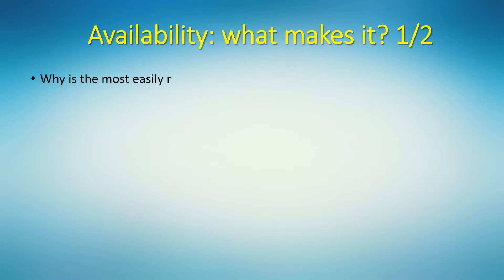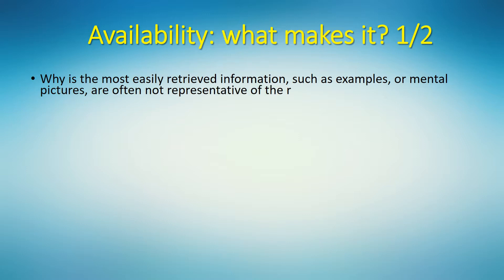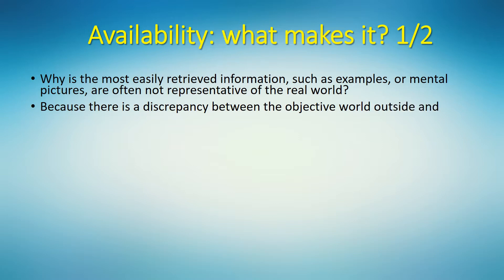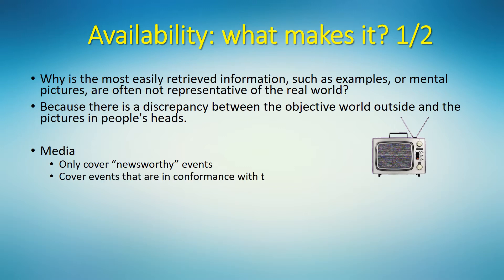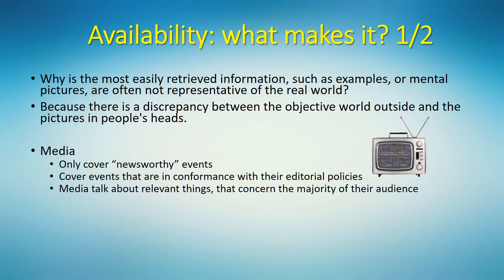But why is the most easily retrieved information — such as examples or mental pictures — often not representative of the real world? Because there is always a discrepancy between the objective world outside and the pictures in people's heads. Think about how media influence the picture in your head. Media only cover newsworthy events. Local news might cover a case of someone who jumped off a building, but not an old person who fell off a bed and died. Besides, media cover events in conformance with their editorial policies, such as political views, and talk about things relevant to the majority of their audience, not the minority.